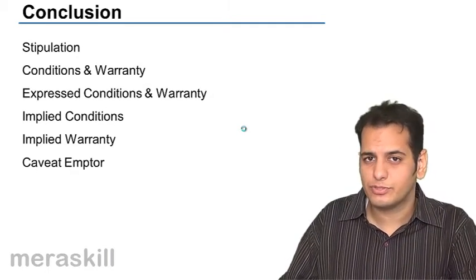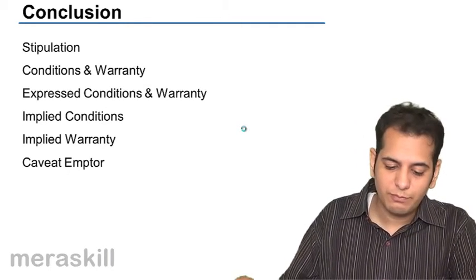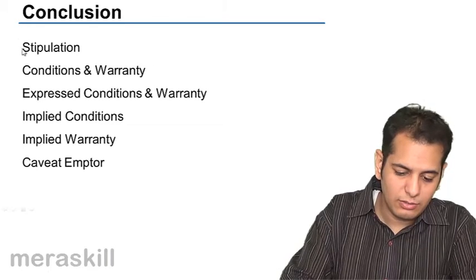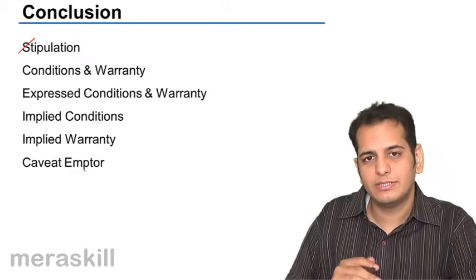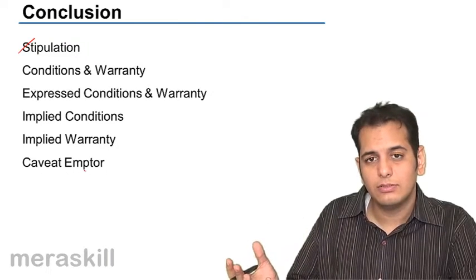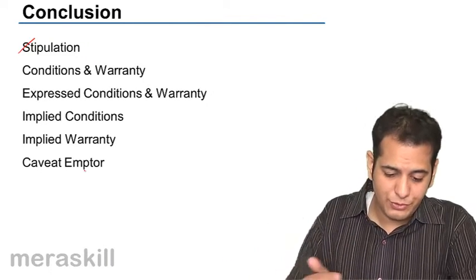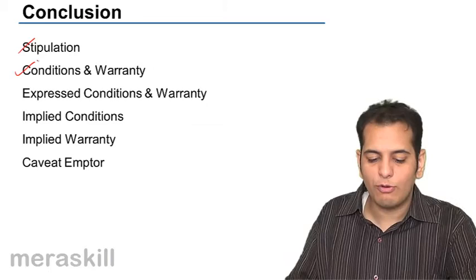So this brings us to the end of this topic. In this topic we have learned what is stipulation. We said stipulation is a term in a contract that can be in the form of condition and warranty.